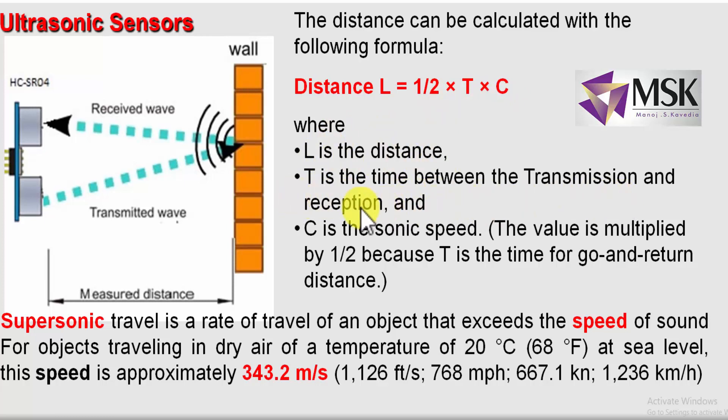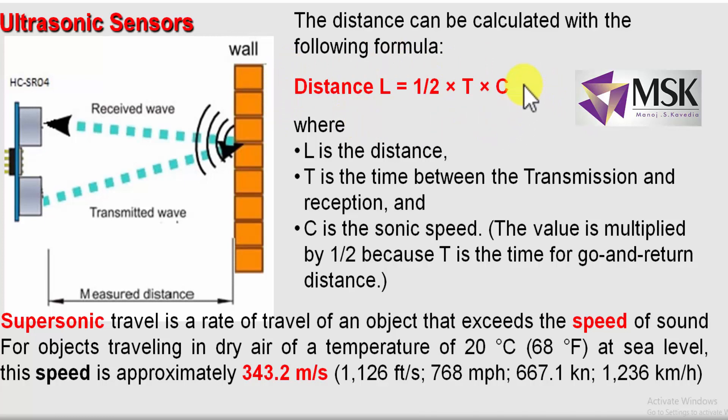The distance is calculated from the time between transmission and reception, and the speed of sound which is 343.2 meters per second. Using this formula we can calculate the distance between the sensor and the obstacle, or we can determine the water level. On my channel, using this ultrasonic sensor I have made a social distancing hardware — you can see that video whose link will be provided in the comment box.